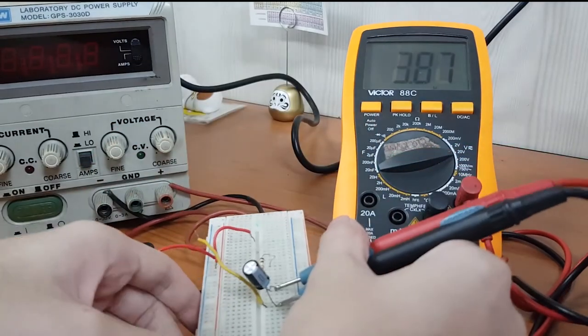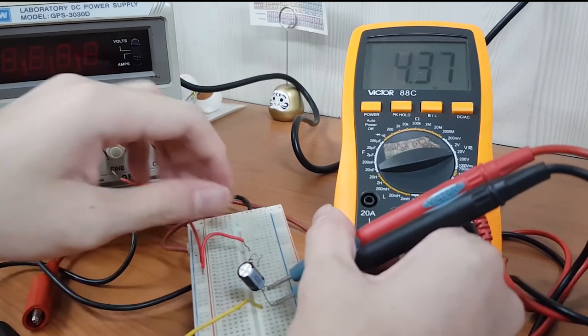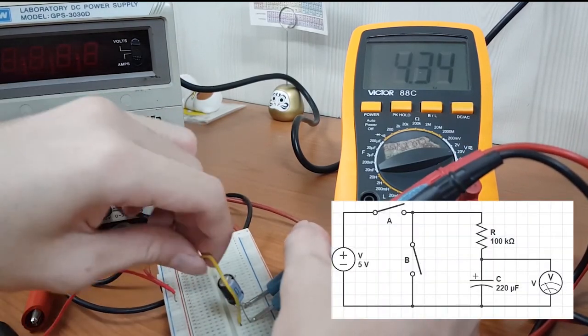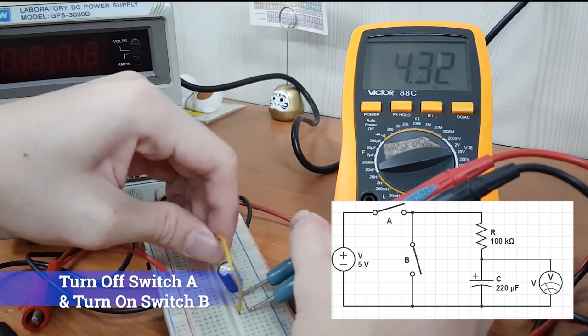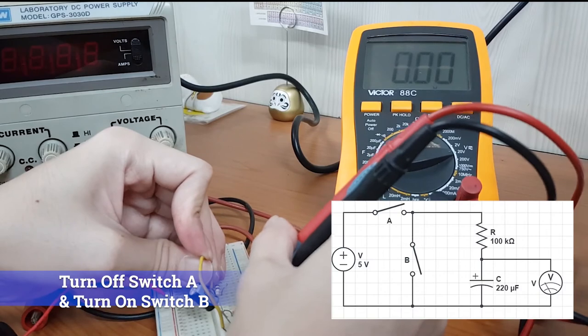Then later, we will connect the yellow wire that will act as our switch B. So we'll connect it at the top of the resistor R and it will serve as the switch B.